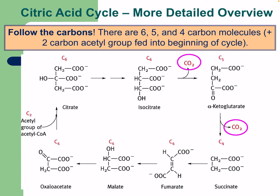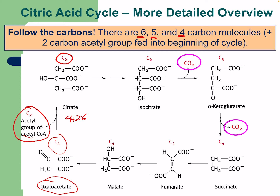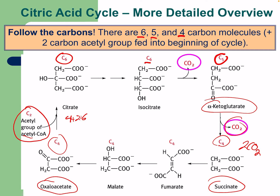It's really important to follow the carbons. There are six-, five-, and four-carbon molecules, plus the two-carbon acetyl group fed into the beginning of the cycle. The two-carbon acetyl group of acetyl-CoA merges with oxaloacetate (four carbons): four plus two equals six, giving us six-carbon citrate. Citrate then loses one carbon to become alpha-ketoglutarate (five carbons), then loses another carbon to form succinate, back to four carbons. Two CO2 are produced per cycle.